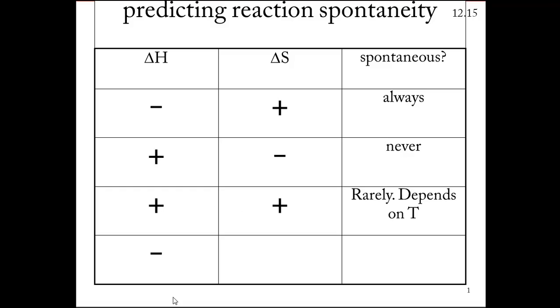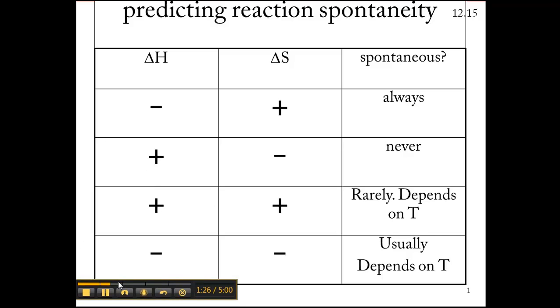This tends to favor spontaneous. This one works in the opposite. So if the temperature is high enough, then this will dominate. And that's how we can predict spontaneity based simply on the signs of the enthalpy and the entropy components.